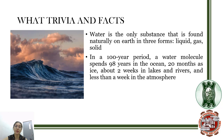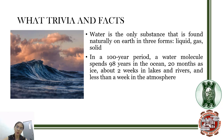Water is the only substance found naturally on Earth in all three forms: liquid, gas, and solid. Naturally, the liquid phase is in the oceans, the solid phase is in icebergs, and the gaseous phase is water vapor in the atmosphere. In a 100-year period, a water molecule spends 98 years in the ocean, 20 months as ice, about 2 weeks in lakes and rivers, and less than a week in the atmosphere.